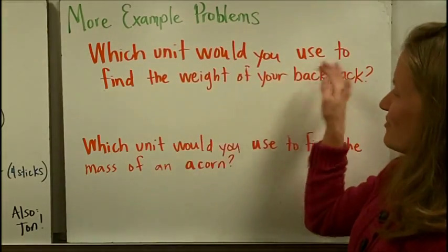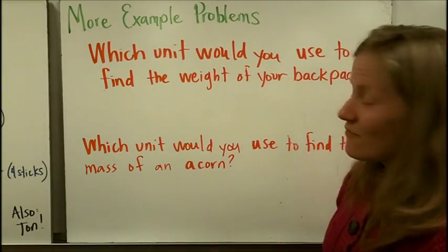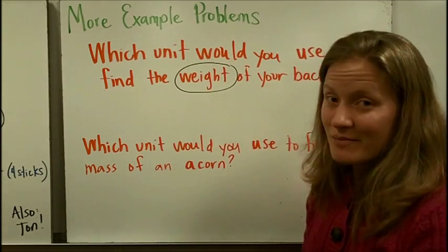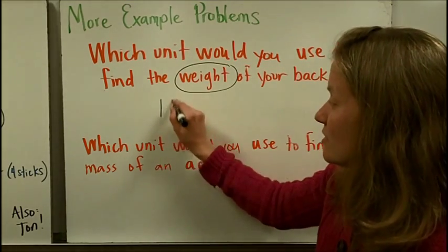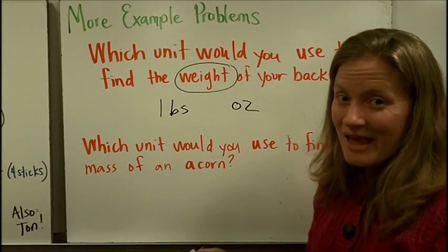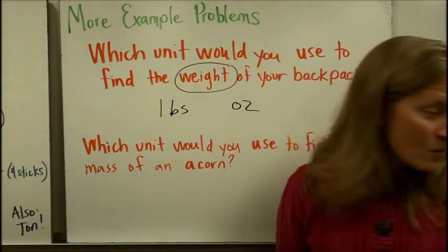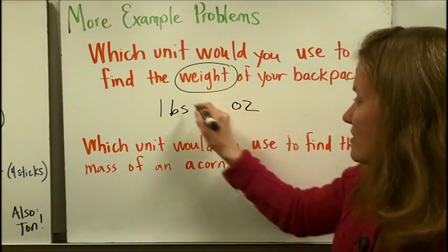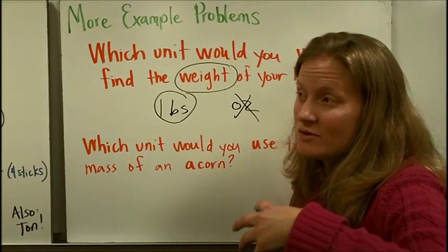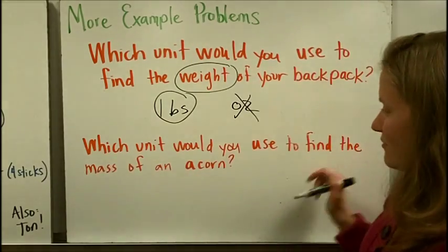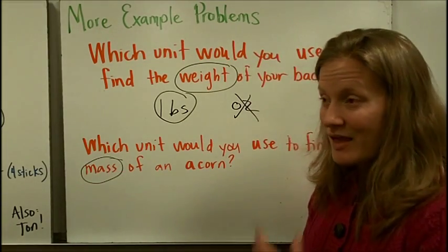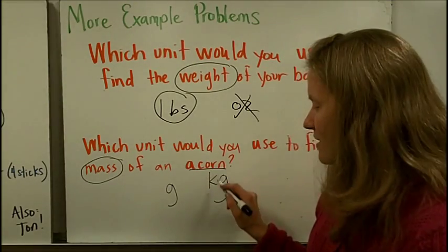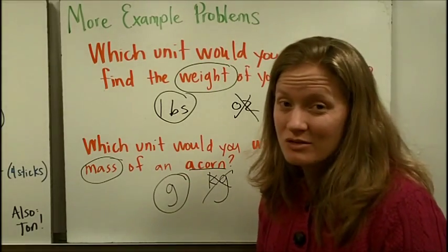Two more example problems. Which unit would you use to find the weight of your backpack? Since it asks for weight, we use U.S. customary units: pounds or ounces. Your backpack is heavier than a piece of bread and likely heavier than a box of butter, so you would use pounds — ounces would result in a very large number. Next, which unit would you use for the mass of an acorn? Mass means metric — grams or kilograms. An acorn is a small thing, so kilograms wouldn't make sense. Grams is the correct unit to measure the mass of an acorn.